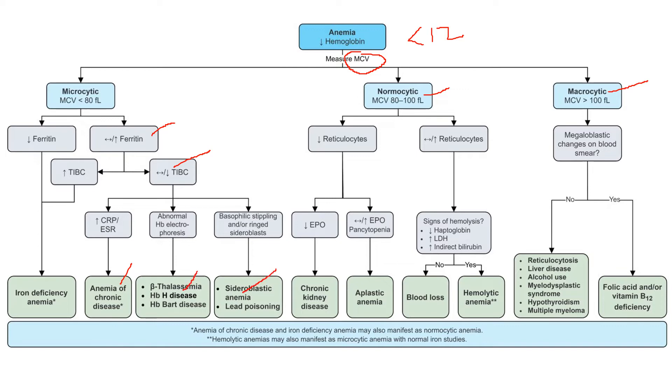Moving on to normocytic anemias, when my MCV is 80 to 100. Now I'm looking for reticulocytes. Reticulocytes are going to tell me whether my body is being induced to produce more red blood cells or it doesn't have enough stimulation to produce more red blood cells.